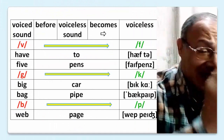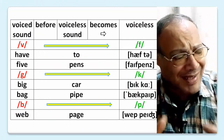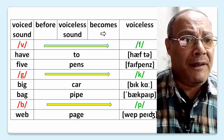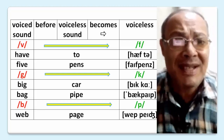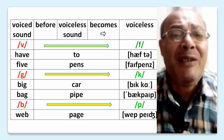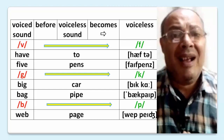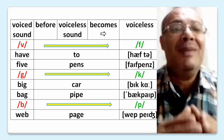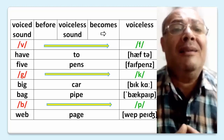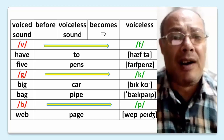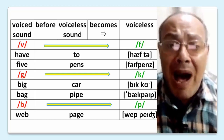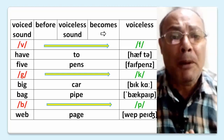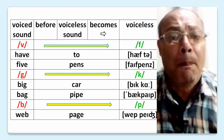Voiced sound before voiceless sound becomes voiceless. V becomes F — 'have two', 'five bins'. G becomes K — 'back car', 'back wipe'. B becomes P — 'web page'.